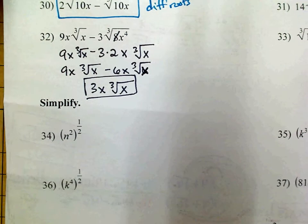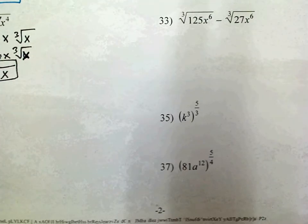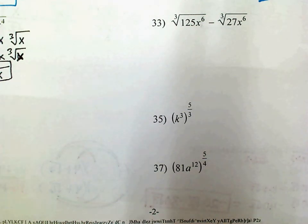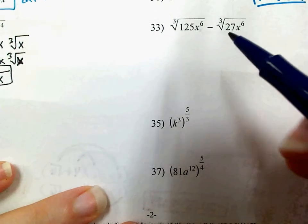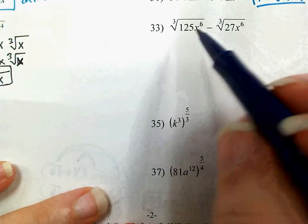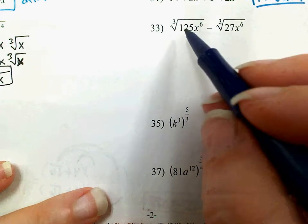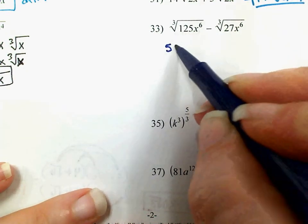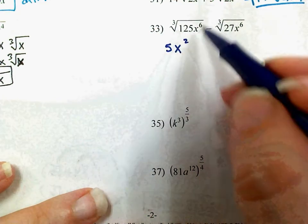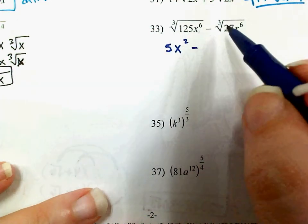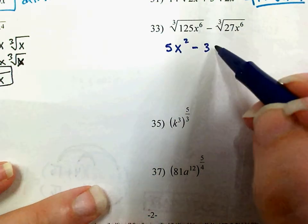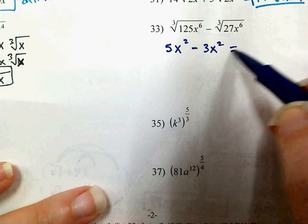On 33, I've got 125x to the 6th under the cubed root and 27x to the 6th under the cubed root. The cubed root of 125 is 5 because 5 cubed is 125. And 3 goes into 6 twice, so that is 5x squared. The cubed root of 27 is 3 because 27 is 3 cubed, and 3 goes into 6 twice evenly. So that is 5x squared minus 3x squared, which is 2x squared.